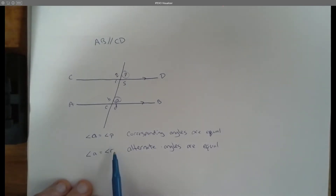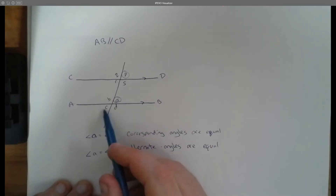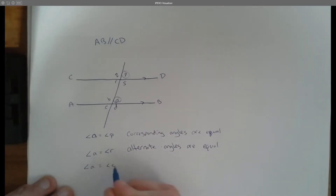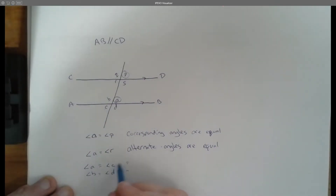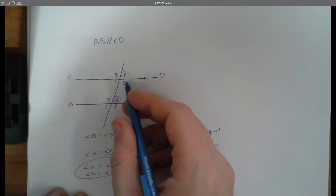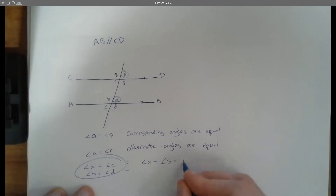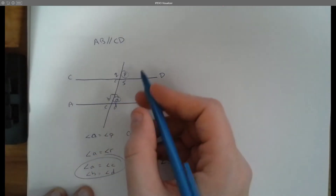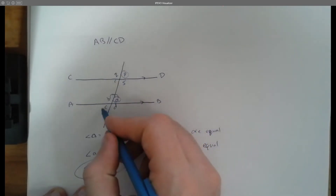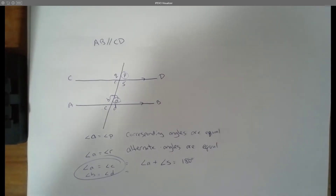Some extra information: we already know from a single line passing through that angle A equals angle C, and angle B equals angle D. We also know that angle A plus angle S is going to equal 180 degrees. In fact, any adjacent pair — A and B, A and S, S and P, P and Q, Q and R, B and C, C and D, D and A — those angles added together are going to equal 180 degrees. With parallel lines, we can use a lot of this information to solve for missing parts of a question.